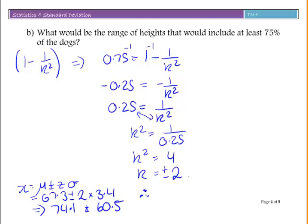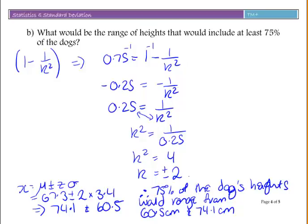Finish with the therefore statement. Therefore, 75% of the dog's heights would range from 60.5 cm to 74.1 cm.